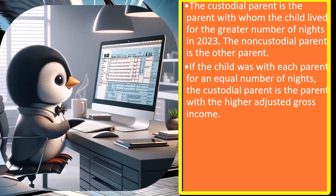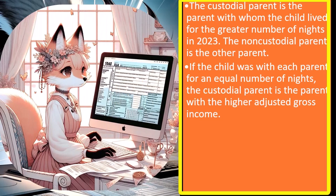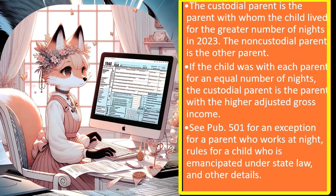This gets complicated because if it's split down the middle, you'd think it would be even — that's how a lot of divorce arrangements might work. If you were trying to prove the number of nights, you might actually track and document them. So if the child was with each parent for an equal number of nights, the custodial parent is the parent with the higher adjusted gross income. Some see that as unfair, but probably because that's the one providing more of the financial support, and possibly the one with a higher tax benefit — though with refundable credits, that may not always be the case. See Publication 501 for exceptions, including a parent who works at night, and rules for an emancipated child.